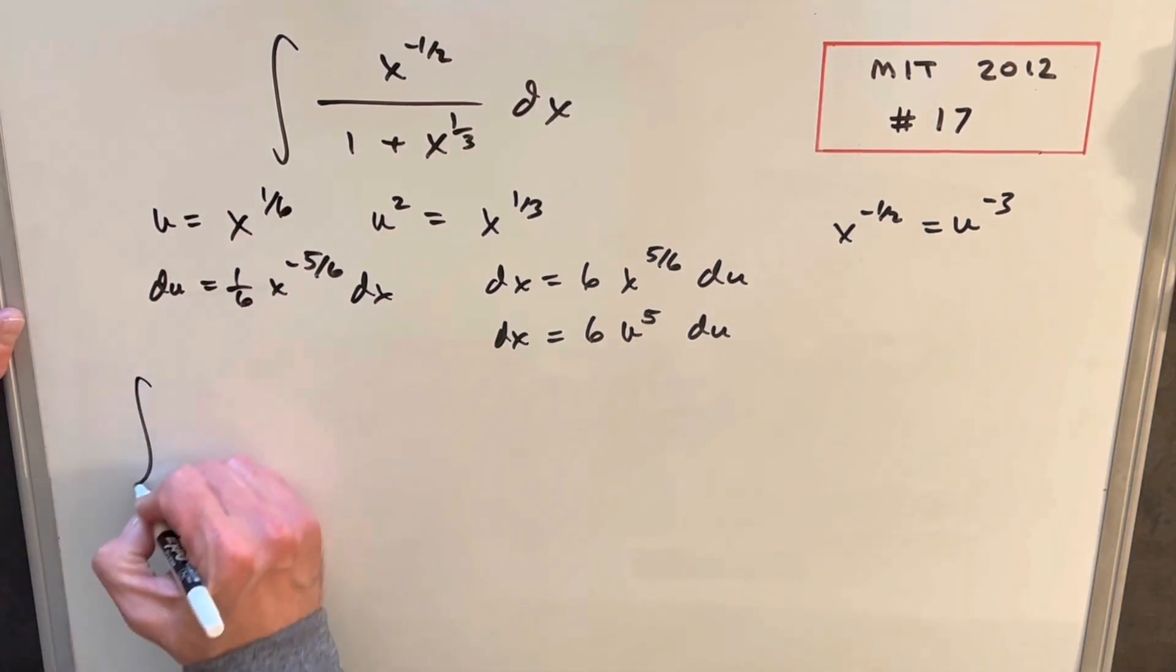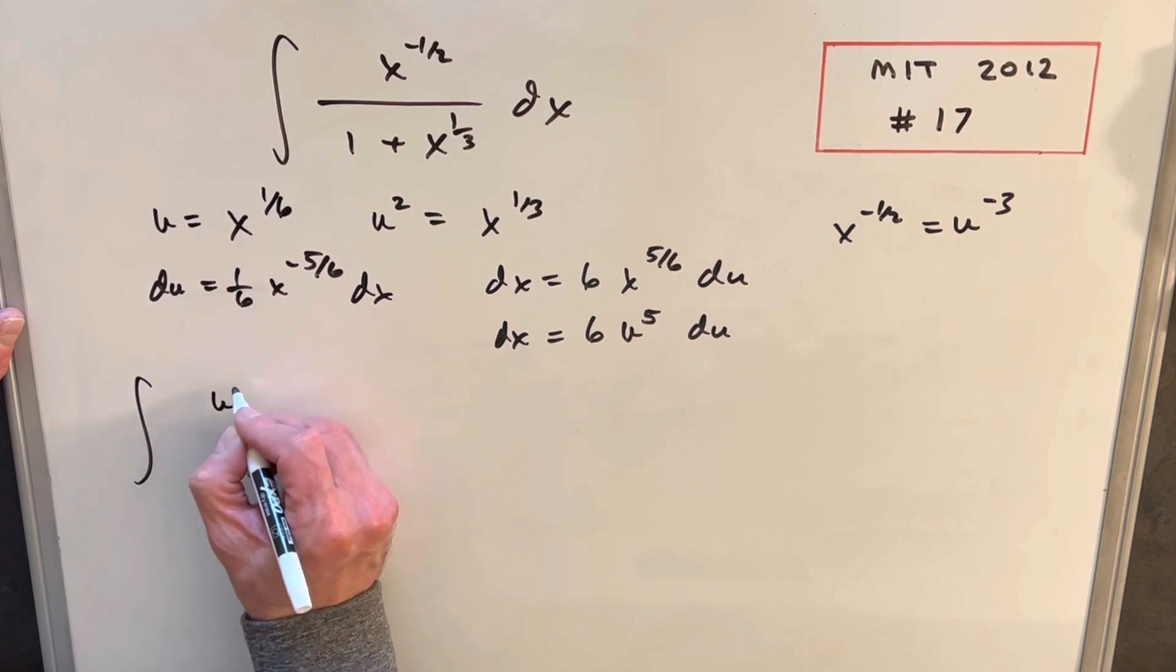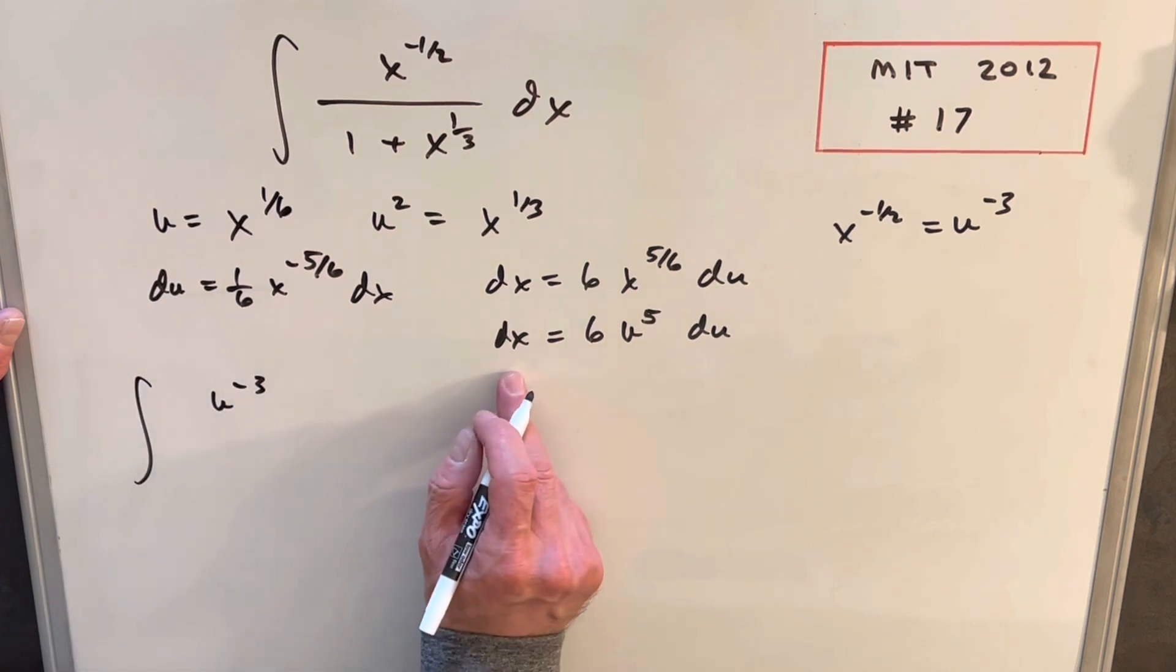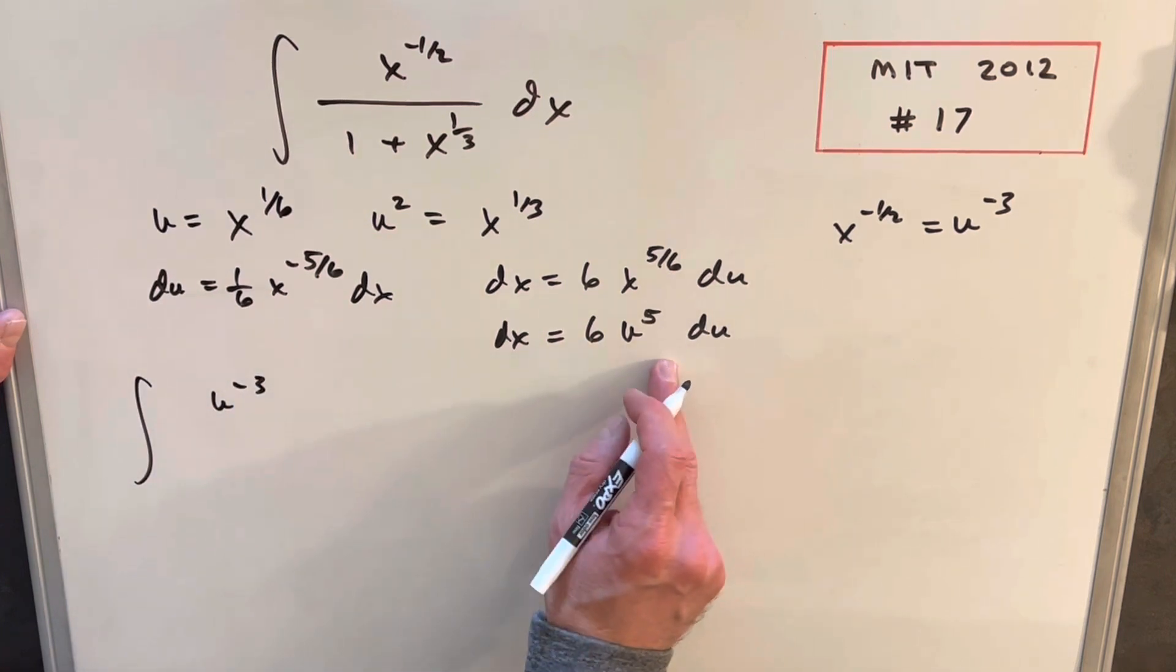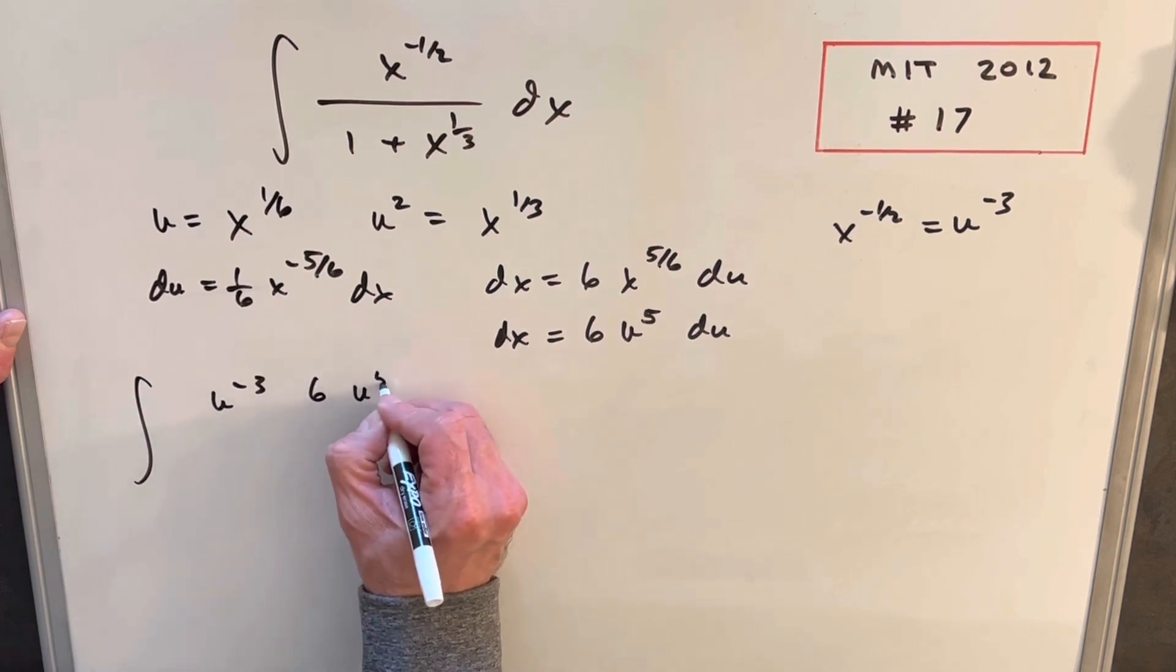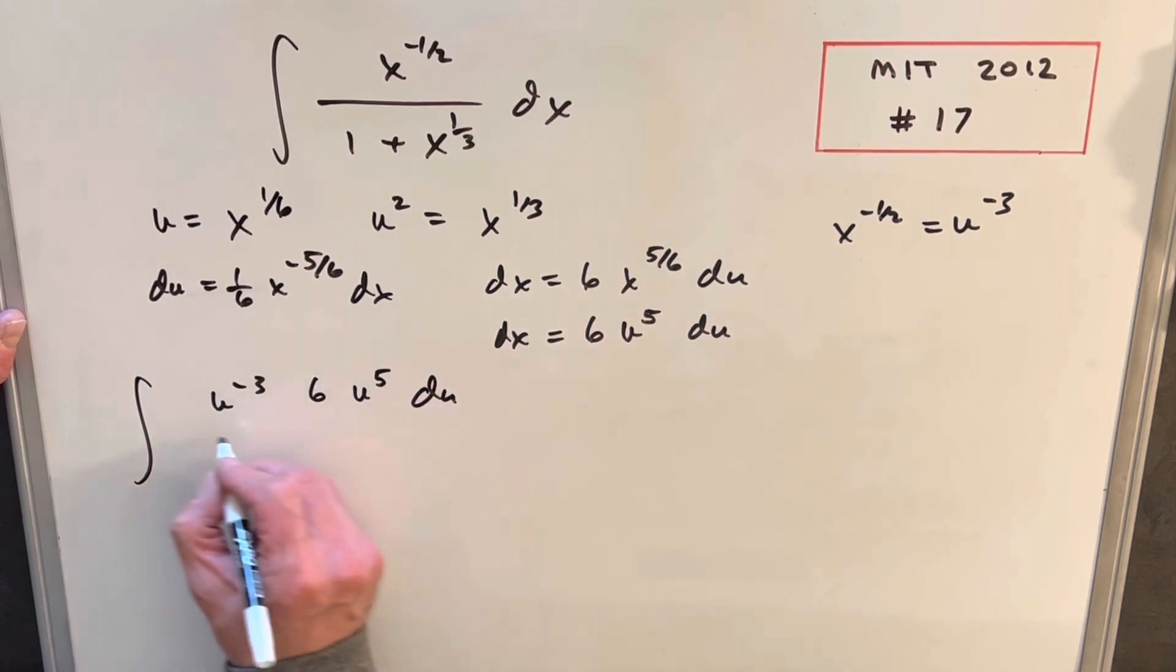Okay, so now we'll make that substitution. So in our numerator, we're going to have that u to the minus 3. Then let's just put our dx in the numerator also. So we're going to have 6 times u to the 5th du.